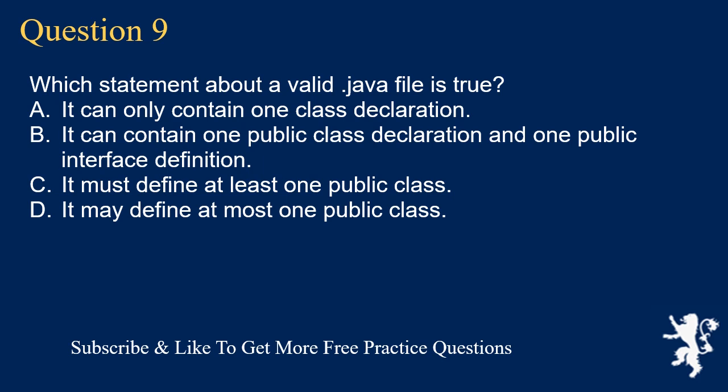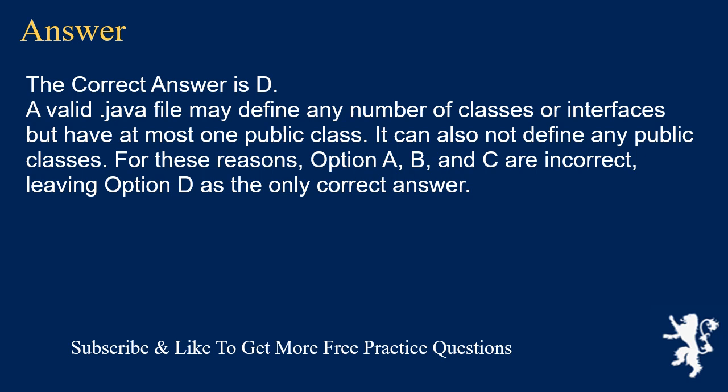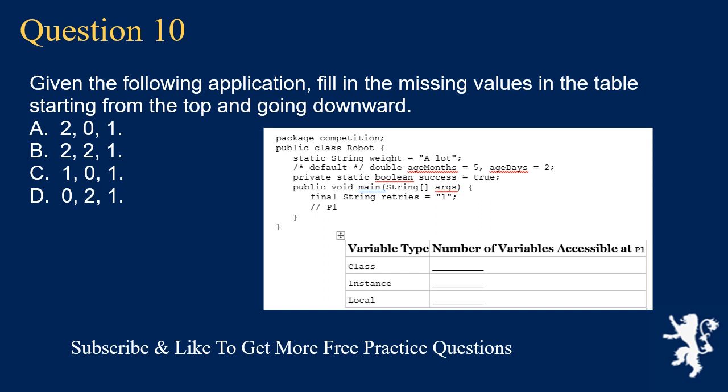Question 9: Which statement about a valid Java file is true? A) It can only contain one class declaration. B) It can contain one public class declaration and one public interface definition. C) It must define at least one public class. D) It may define at most one public class. The correct answer is D. A valid Java file may define any number of classes or interfaces but have at most one public class. It can also define no public classes. For these reasons, options A, B, and C are incorrect, leaving option D as the only correct answer.